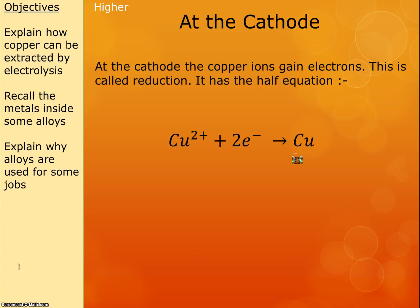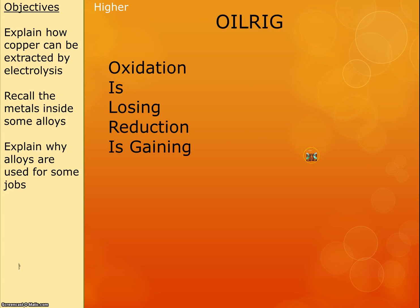At the cathode, the ions are gaining electrons — this is reduction. The half equation is: Cu²⁺ plus two electrons gives Cu. To help you remember which way around it is: oxidation is losing, reduction is gaining. The acronym to help you remember is OILRIG — oxidation is losing electrons, reduction is gaining electrons.